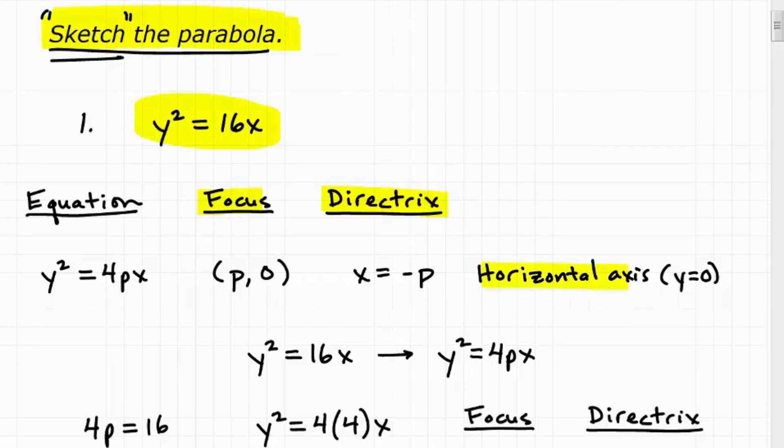And we know we're talking about a horizontal axis parabola. Now, why do we know that we're talking about a horizontal axis parabola? Because horizontal axis parabolas have the y squared term. And you can see that this problem is a y squared parabola. So it's going to be a horizontal axis.